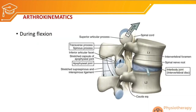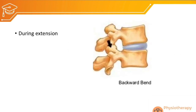For arthrokinematics during flexion: the inferior articulating facet of the superior vertebra (e.g., L1) slides superiorly and slightly anteriorly on the superior articulating facet of the inferior vertebra (e.g., L2). This facet sliding is the main source of movement in the vertebral column. During extension, the inferior articulating facet of the superior vertebra slides inferiorly on the superior articulating facet of the inferior vertebra.